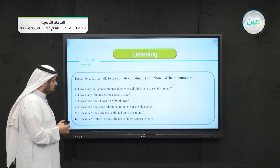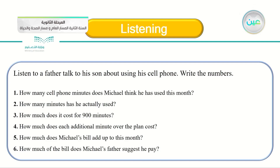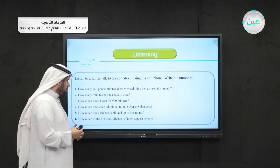Number three: how much does it cost for 900 minutes? Remember, try to remember it. Number four: how much does each additional minute over the plan cost? When you have a plan, each minute over the plan costs something — how much is that? Number five: how much does Michael's bill add up to this month? Try to remember this number also.